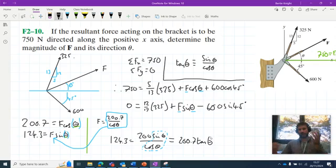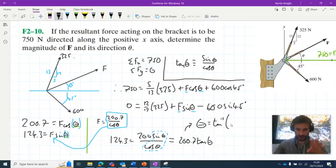All of a sudden, this is pretty simple. We can rearrange this 124.3 equals 200.7 tan theta and we can say that theta is equal to the inverse tan of 124.3 all over 200.7, which gives us a value of theta of 31.8 degrees.